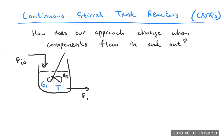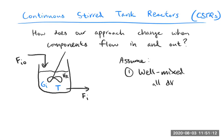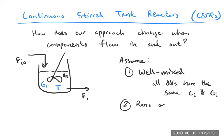Let's talk about assumptions. Assume one: everything is well mixed. Continuously stirred means everything is well mixed within the reactor — all infinitesimal volumes, all DVs, have the same Ci and Gi. Assume two: reactions only occur in VR, the volume of the reactor.